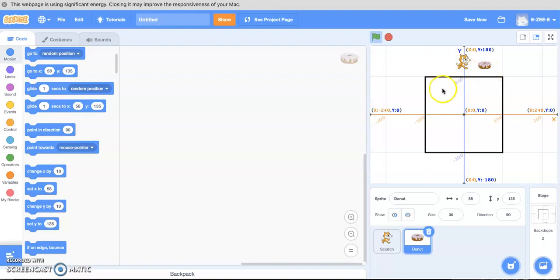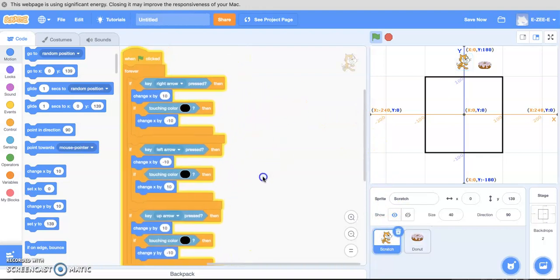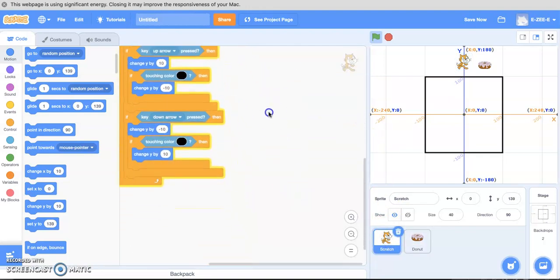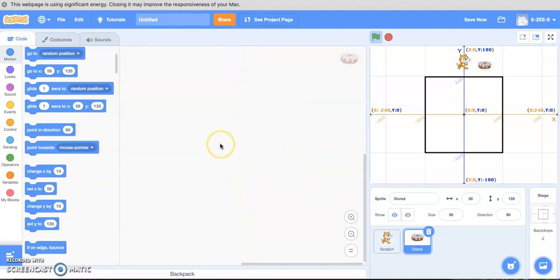Scratch is hungry for that donut. Notice I've clicked on the donut and all my code disappeared. So that means we're now actually in the donut's brain and the donut doesn't have any brains. If you click back on Scratch you can see all his movement brain here. When we click on the donut, the donut does not have any brains which is true in real life too.